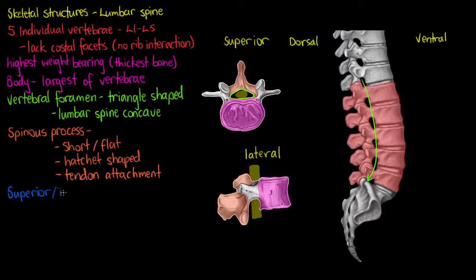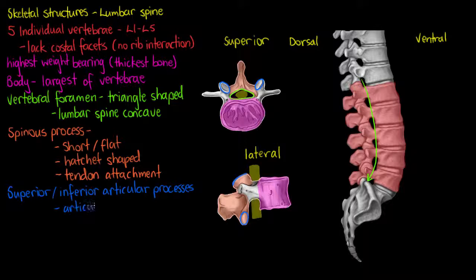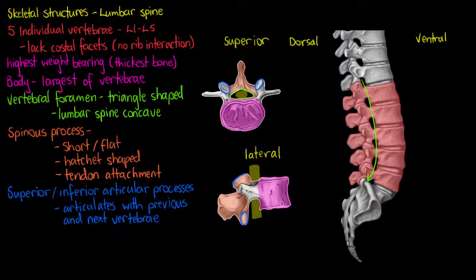The next feature we'll see at the anterior portion of that spinous process are the superior and inferior articular processes. These are the points at which our lumbar spine will articulate with the previous and the next vertebrae in the column. I'm just showing where those articular processes are here — the superior and inferior, so top and bottom. They articulate with the previous vertebrae on the superior side and with the next vertebrae on the inferior surface, forming joints between our lumbar vertebrae.